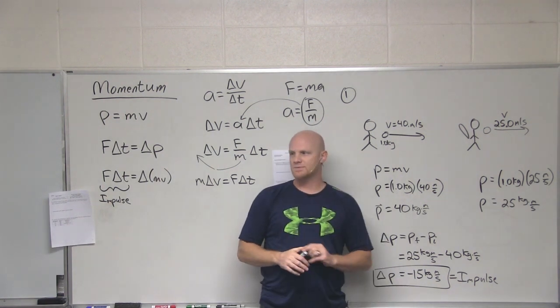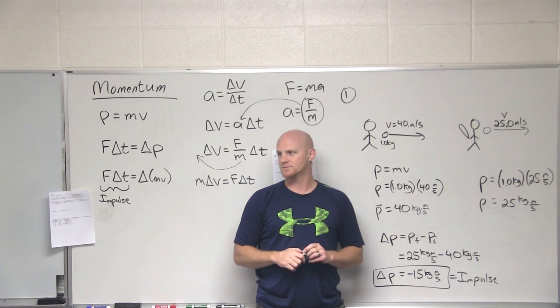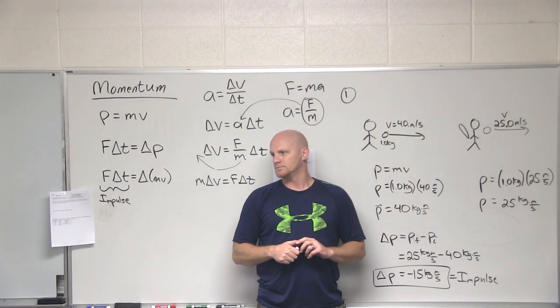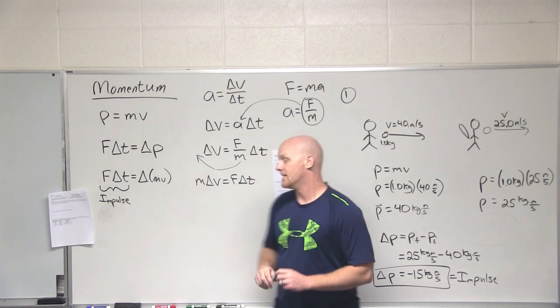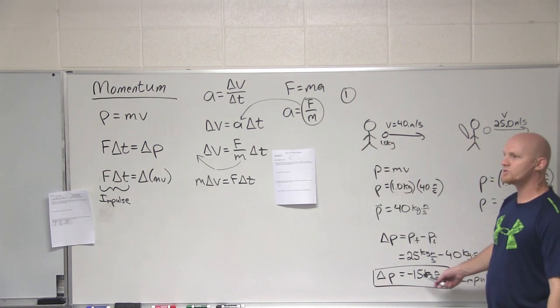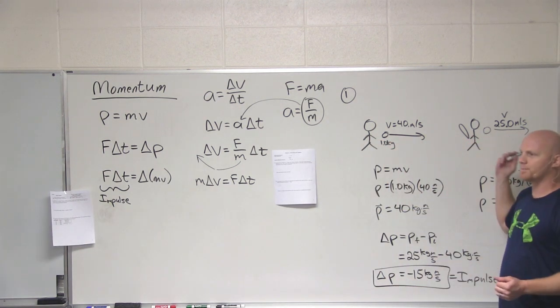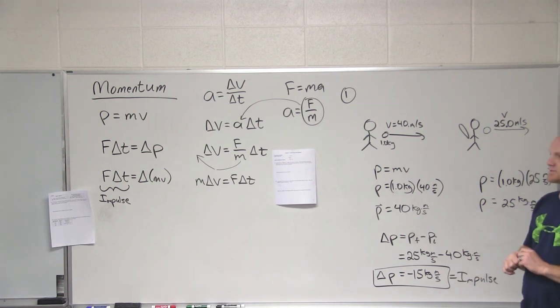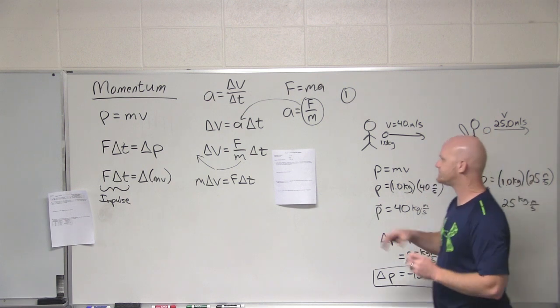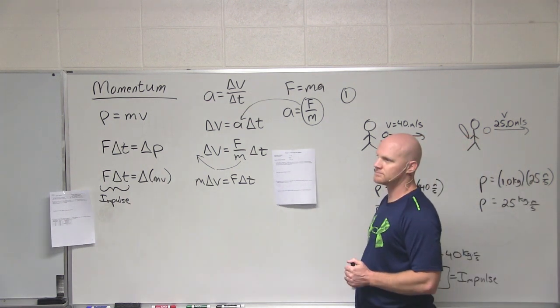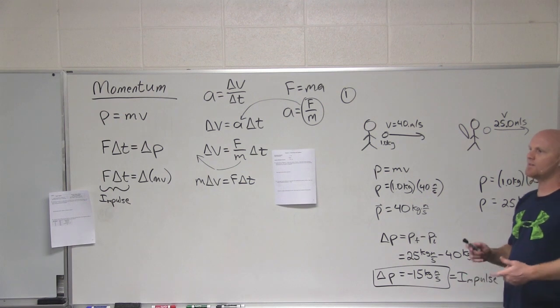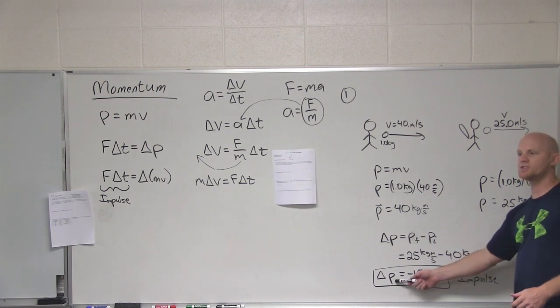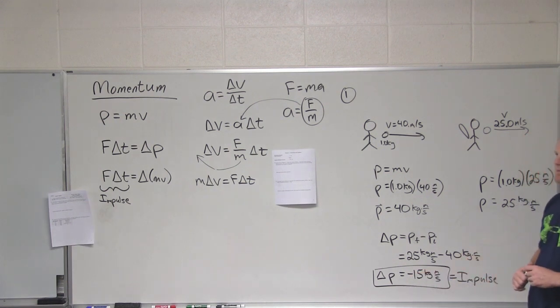So can we still use this same equation if they give us a change in time? Yeah, so notice if I told you how long the bat was in contact with the ball, then you could set this equal to FΔt and solve for the force. In fact, that's exactly what we'll do in the next problem with a different example. So that whole term is just the impulse. Whether you have F and Δt or whether you can calculate the change in momentum, either one is equal to the impulse.